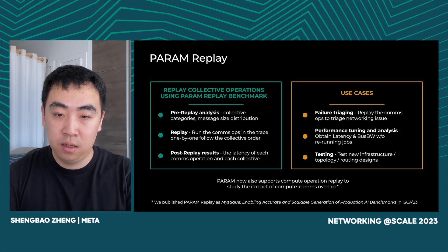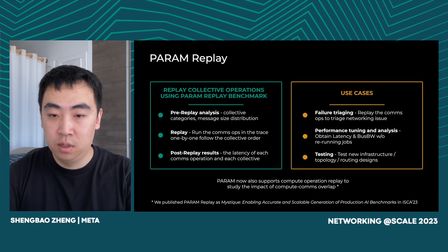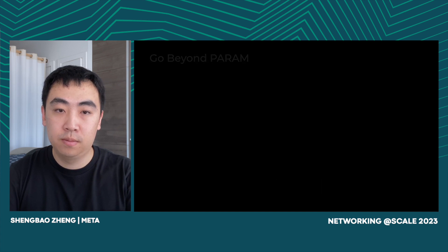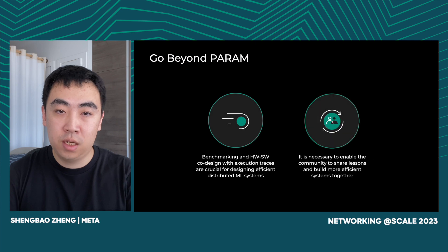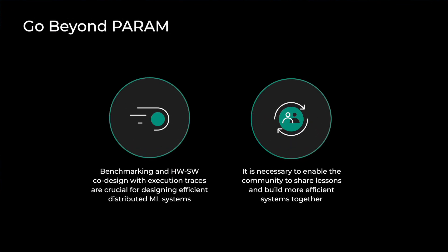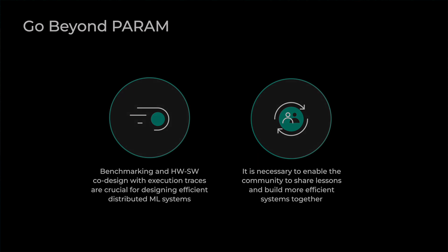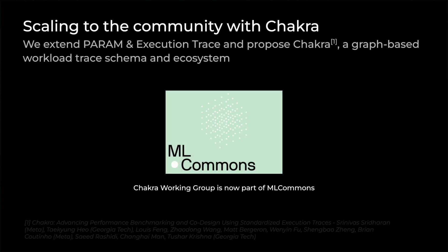To better study the impact of compute and communication overlap, we recently added a compute replay port to PARAM Benchmark and published this work at IISWC 2023. Benchmarking and hardware-software co-design with execution traces are crucial for designing efficient distributed machine learning systems. It is necessary to enable the community to share lessons and build more efficient systems together.